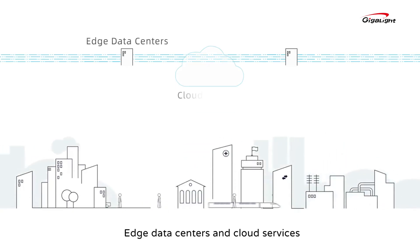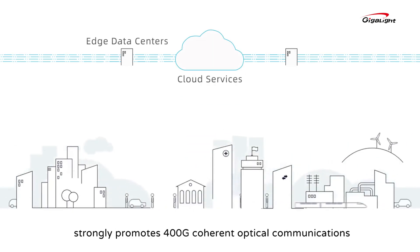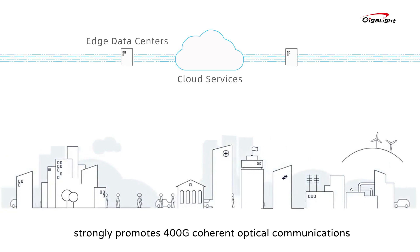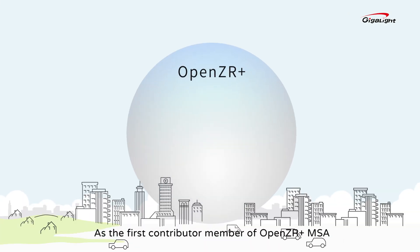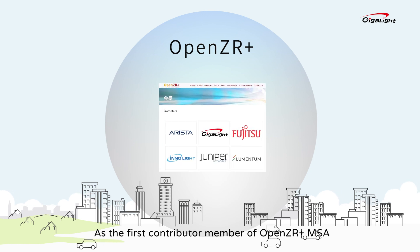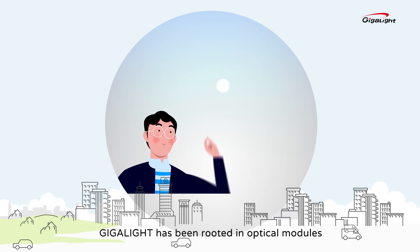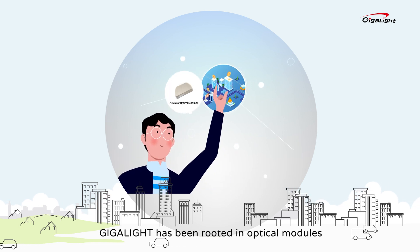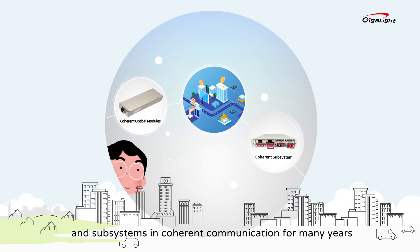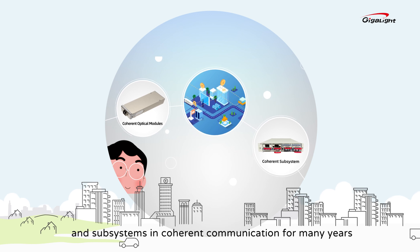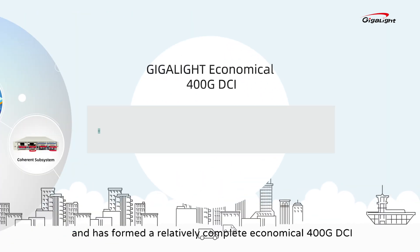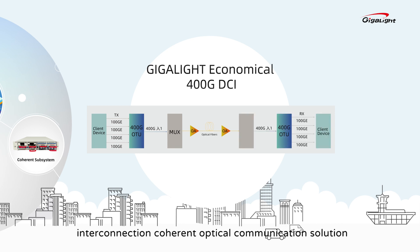Edge data centers and cloud services strongly promote 400G coherent optical communications. As the first contributor member of the OpenZR Plus MSA, Gigalight has been rooted in optical modules and subsystems in coherent communication for many years, and has formed a relatively complete, economical 400G DCI interconnection coherent optical communication solution.